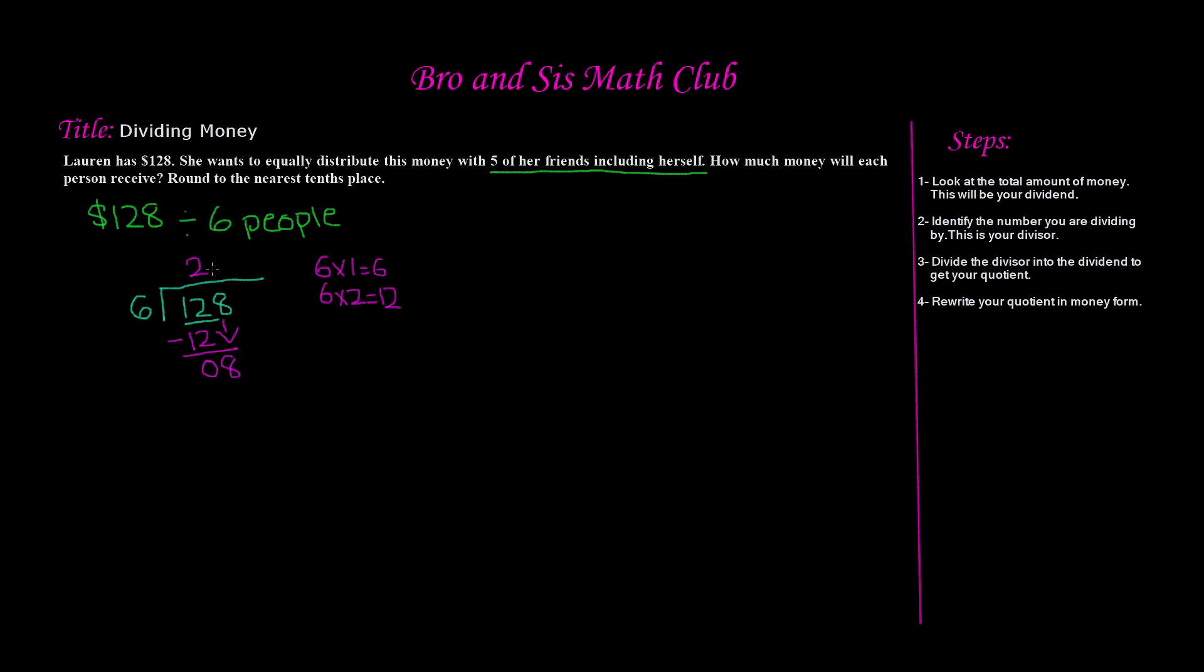Now how many times does six go into eight? Well, we know that six times one is six. Now if we subtract, eight minus six is two and we're left with a remainder. Now keep this thing in mind. When you're dividing money, it doesn't only have to be division. It could be addition, subtraction, multiplication, division. Anything that you're dealing with money, you cannot have fractions, but you can have decimals.